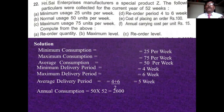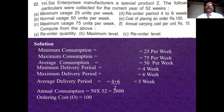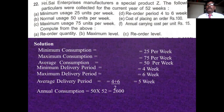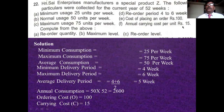Average consumption per week is 50 units, already given in the problem. Multiply by 52 weeks to get annual consumption: 52 × 50 = 2,600 units. Ordering cost for one order is 100 rupees and carrying cost per unit is 15 rupees. First collect all the information, then calculate what is asked.